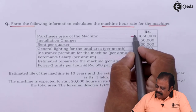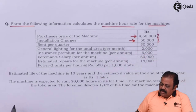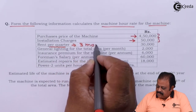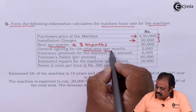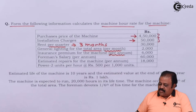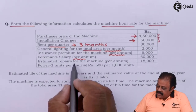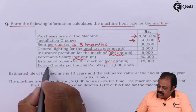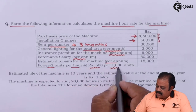Purchase price of machine 4,50,000. Installation charges 50,000. Rent per quarter, that is given for 3 months. General lighting for the total area per month 2,000. Insurance premium for the machine per annum 6,000. 4 months salary per annum 60,000. Estimated repairs for the machine per annum 18,000. Power: 2 units per hour at the rate of rupees 500 per 1000 units.